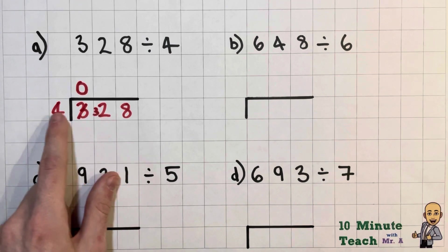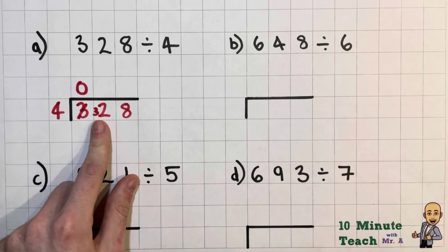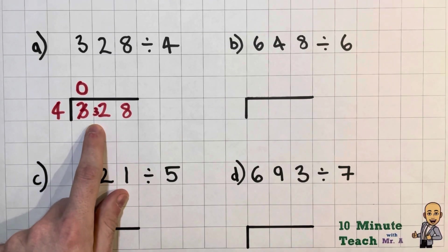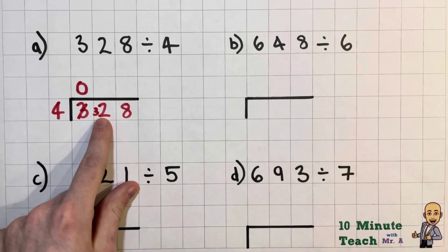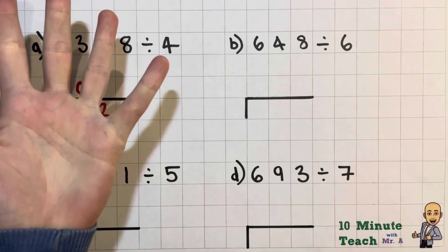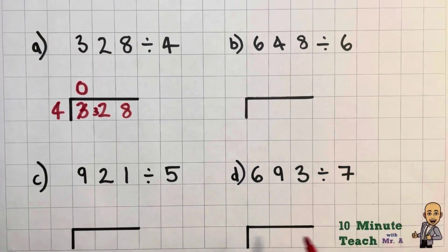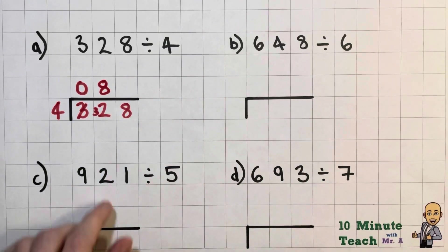So how many fours can I fit in 32? Well let's have a look. If I was struggling with this I could use some of my skip counting songs. So let's have a look. Now let's all join together counting fours: 4, 8, 12, 16, 20, 24, 28, 32. So I can actually fit eight in there, fantastic.